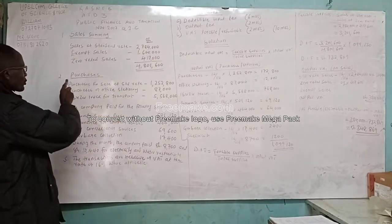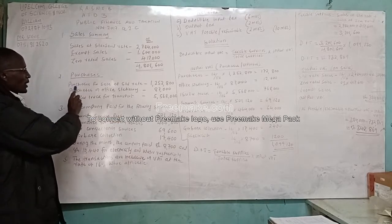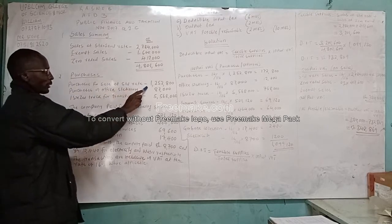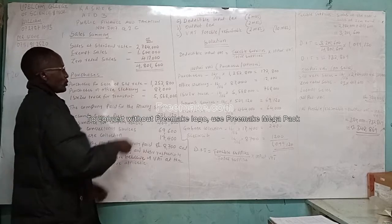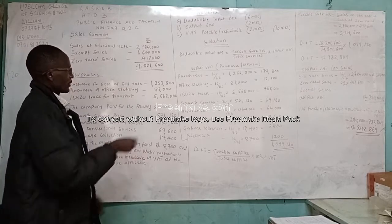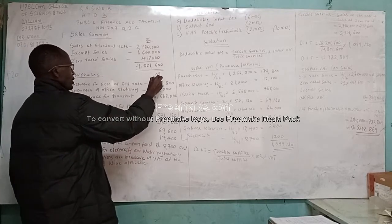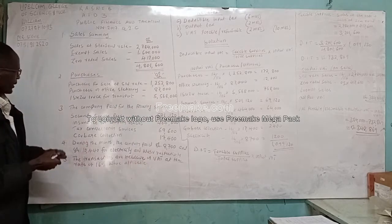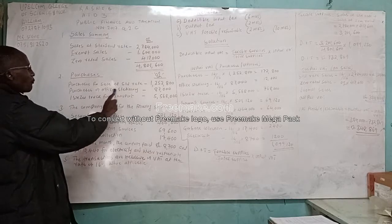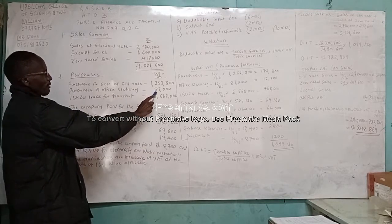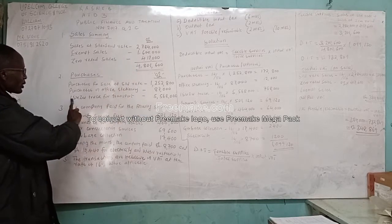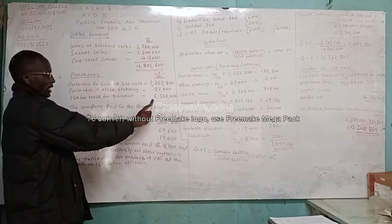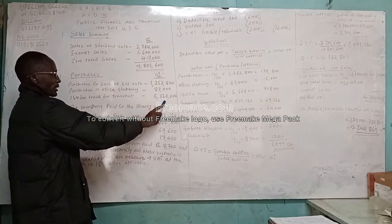Number 2 is about purchases. We have purchases for sale at standard rate 1,252,800 shillings, then purchases of office stationery shillings 87,000, then Isuzu truck for transport shillings 5,568,000.